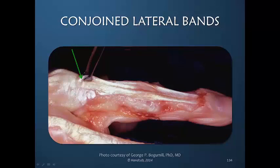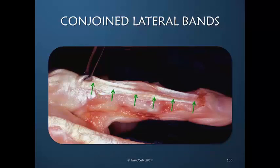Therefore, both the central slip and lateral bands are working actively to fully extend the finger. There is no tension in the lateral portion here — the tension is all in the central portion. However, in a live patient actively performing this motion, there would also be tension here from the contributory pull of the interosseous muscle, but in this cadaver the tension is all transferred over.